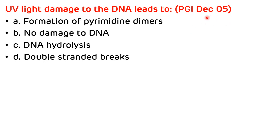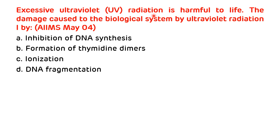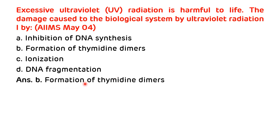Second question from PGI December 2005: UV light damage to DNA leads to — formation of pyrimidine dimers, no damage to DNA, DNA hydrolysis, or double-stranded breaks? The answer is formation of pyrimidine dimers. Third question from AIIMS May 2004: Excessive ultraviolet radiation is harmful to life. The damage caused to the biological system by ultraviolet radiation is — inhibition of DNA synthesis, formation of thymidine dimers, ionization, or DNA fragmentation? The answer is formation of thymidine dimers.